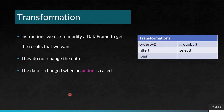What is a transformation? Transformations are instructions we use to modify a data frame to get the results that we want. They do not change the data — the data is changed when an action is called. Examples of transformations include: order by, group by, filter, select, and join.